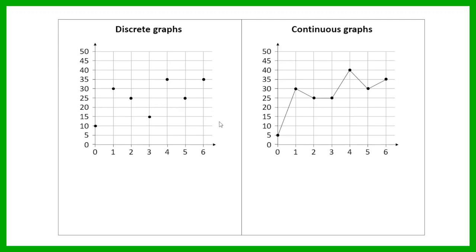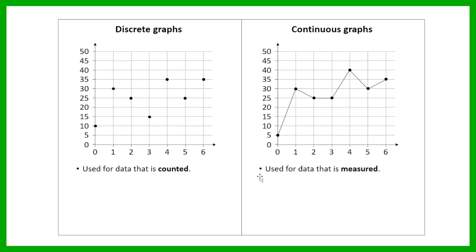A discrete graph is used for data that is counted, and a continuous graph is used for data that is measured. That's the difference between discrete data and continuous data. A discrete graph is drawn from discrete data — which is counted — and a continuous graph is drawn from continuous data — which is measured. In a discrete graph, the points are not going to be joined, whereas in a continuous graph, the points will be joined by a line or a curve.